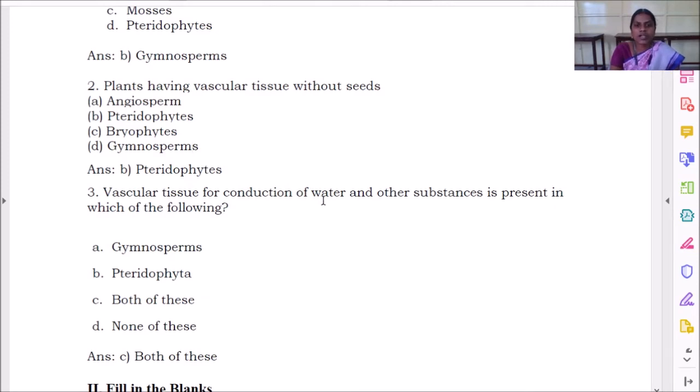Vascular tissue for conduction of water and other substances is from both gymnosperms as well as pteridophytes. So the answer is both of these.